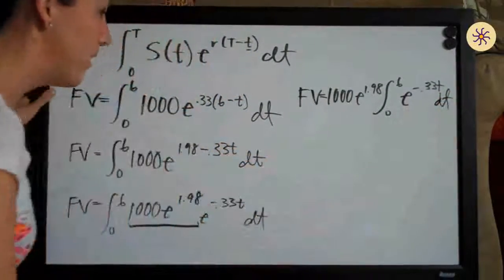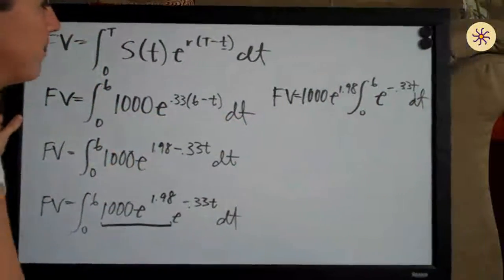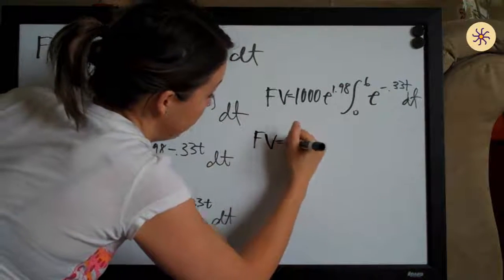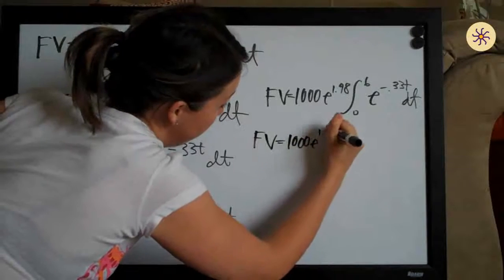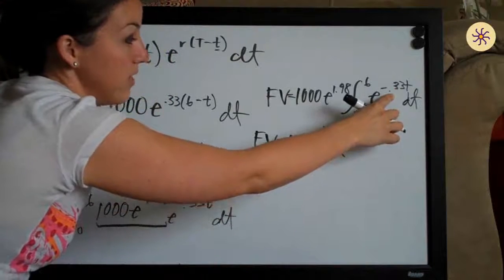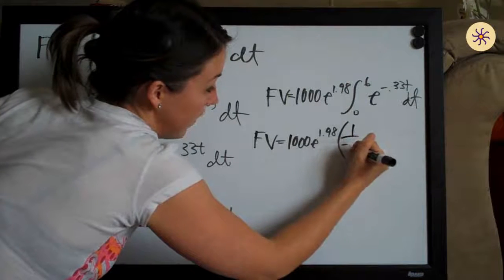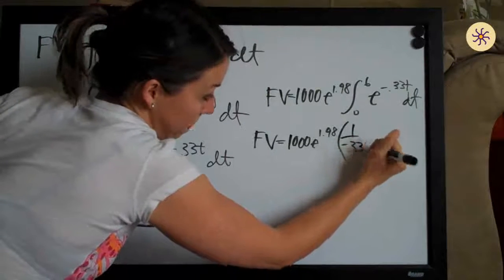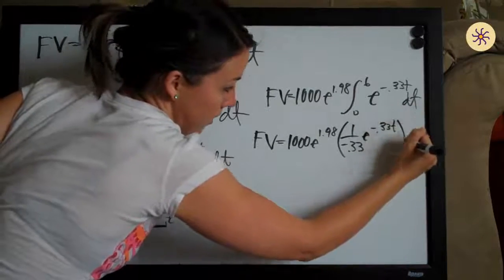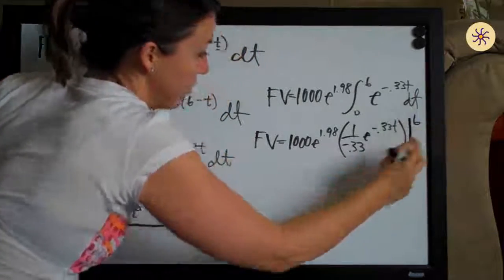Now e to the negative point three three t is easy to integrate. We divide by the coefficient on the exponent of the e, giving us one over negative point three three, times e to the negative point three three t. That's our entire integral, and we evaluate it on the range zero to six.